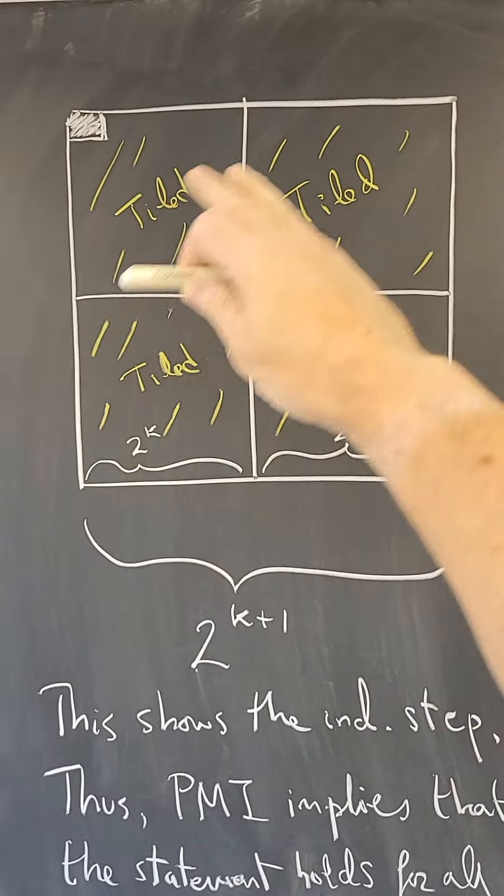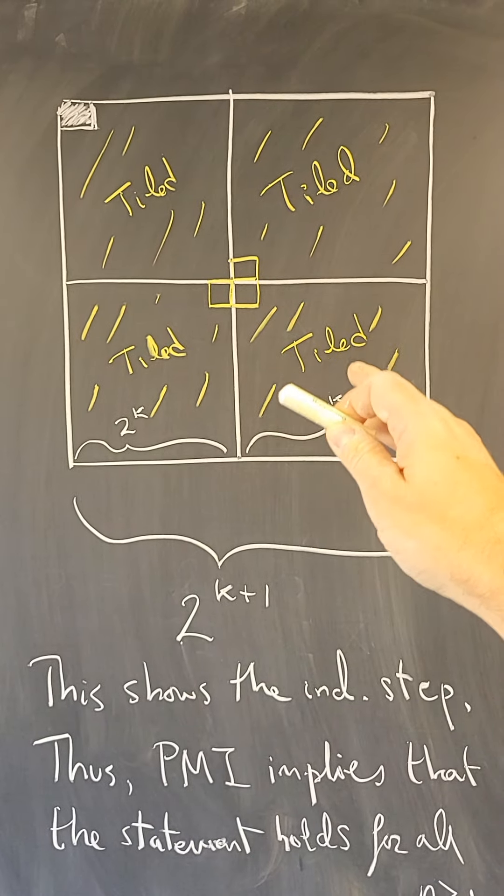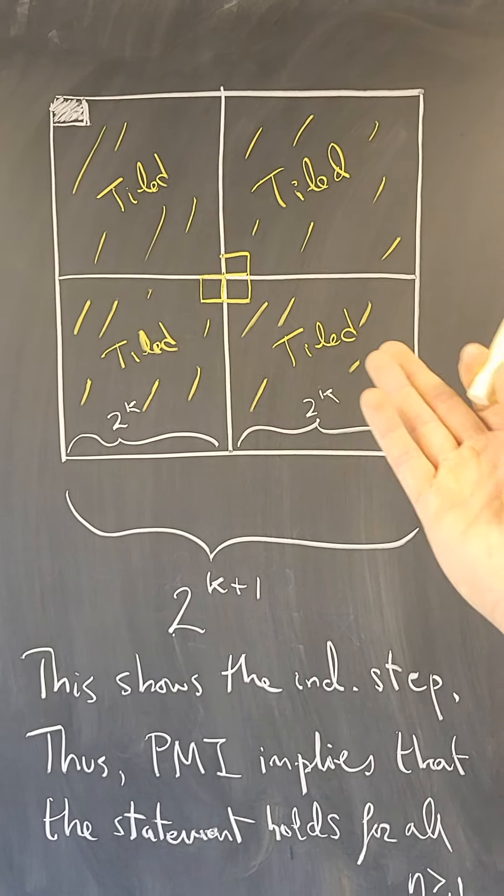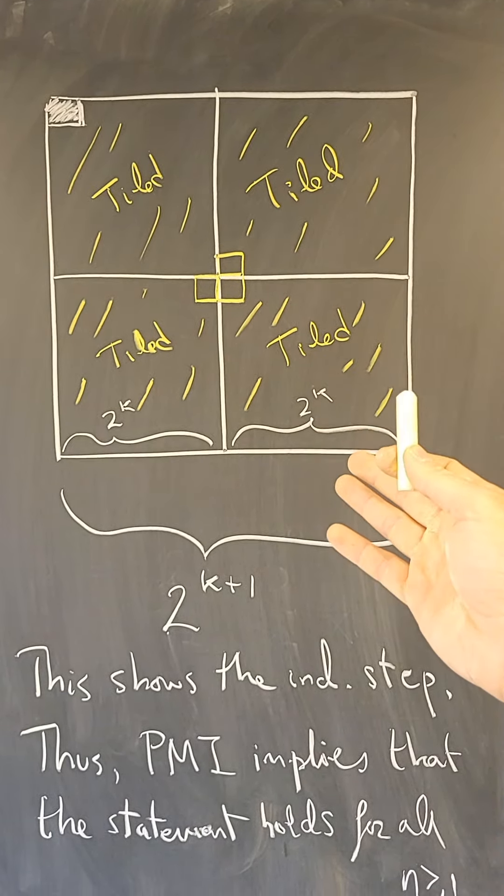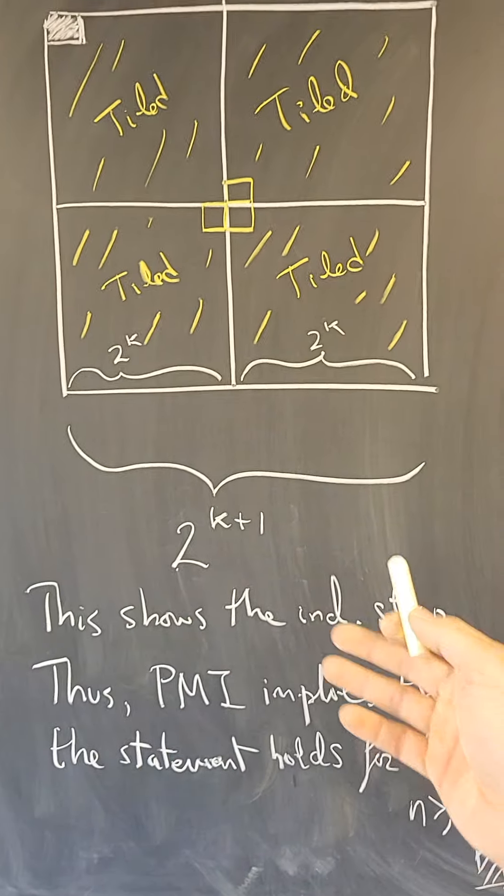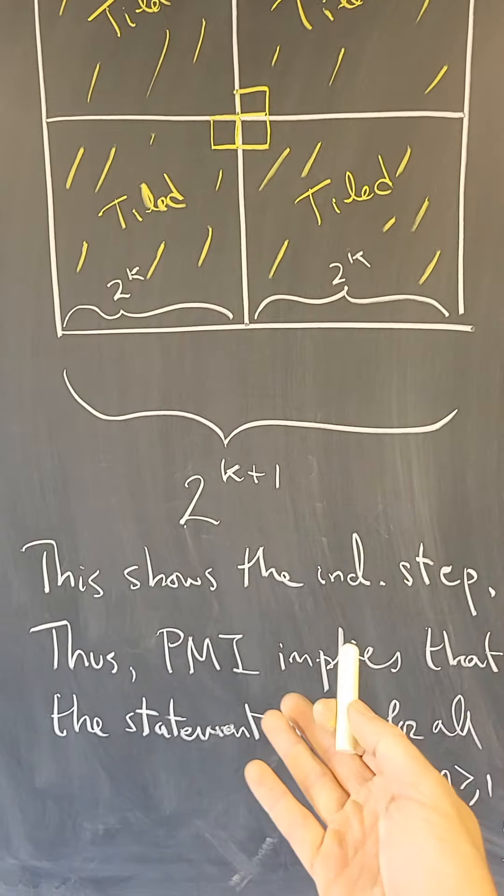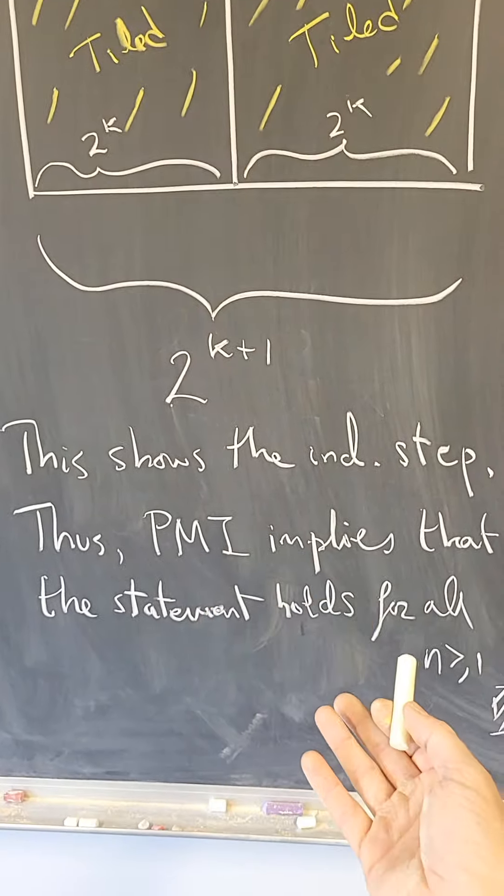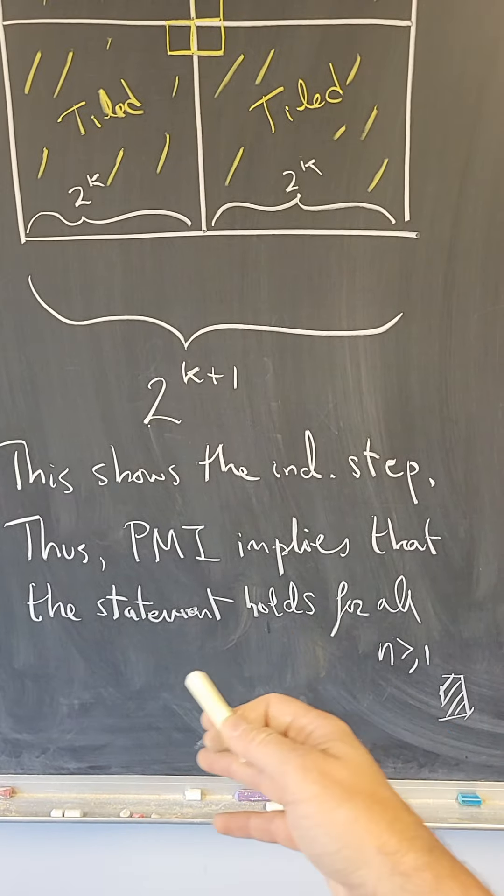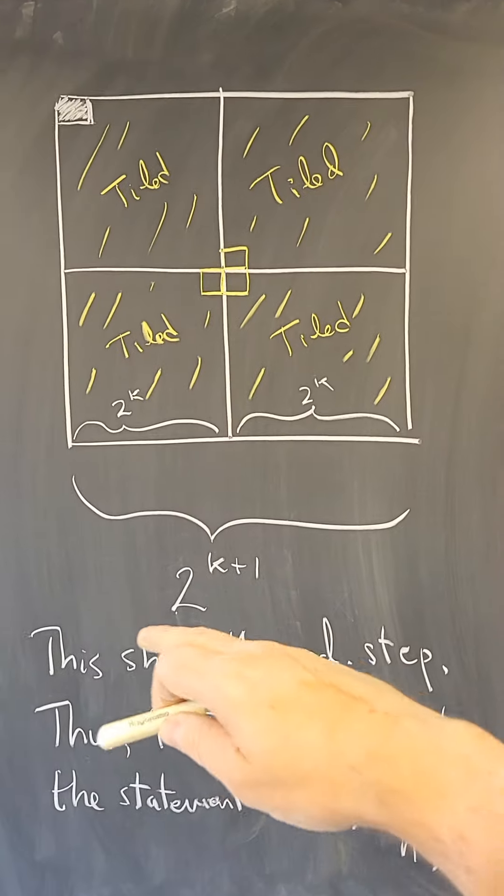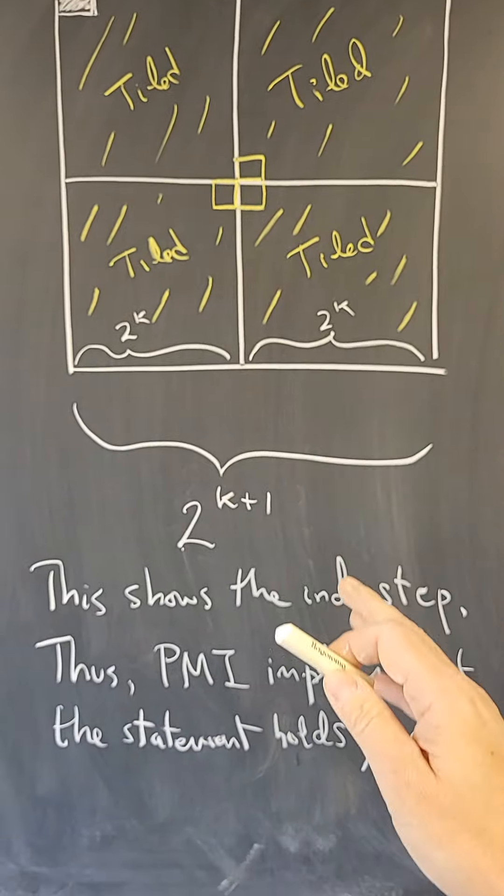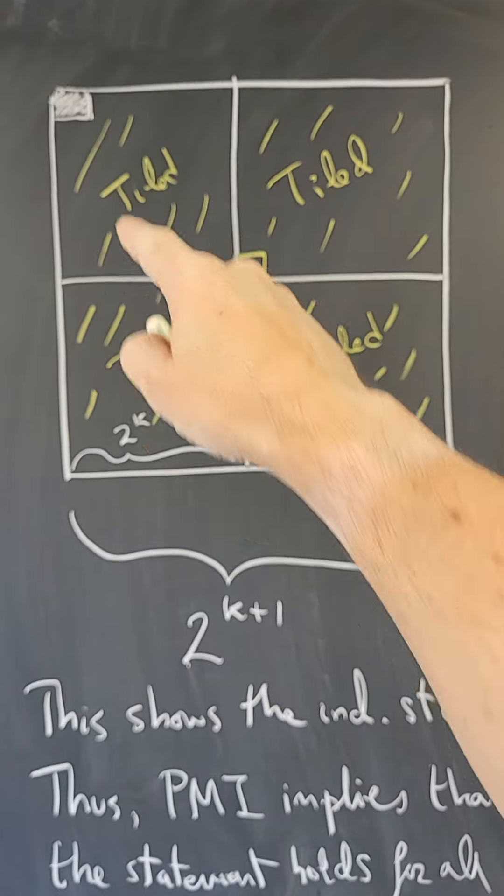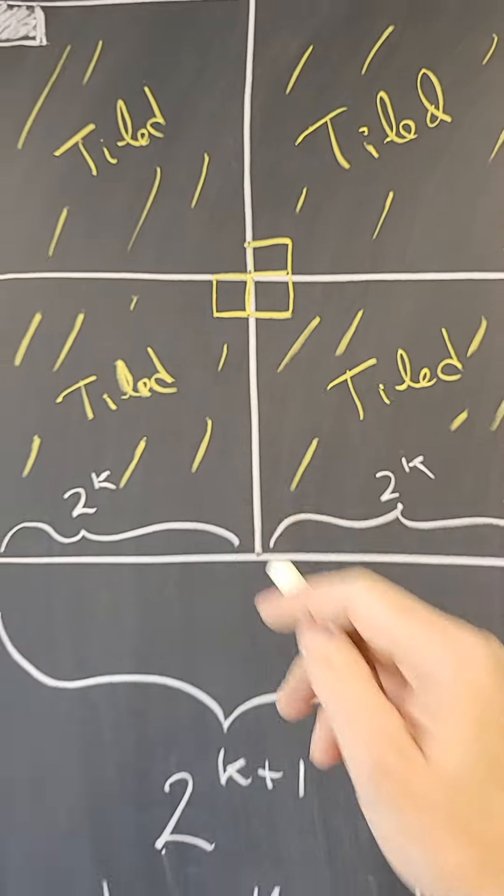Therefore, I've been able to tile the 2 to the k plus one by 2 to the k plus one chessboard, and that concludes the proof of the induction step. And therefore, the principle of mathematical induction implies that the statement holds for all n. Any chessboard that is 2 to the n by 2 to the n with one corner removed can be tiled with pieces of that sort.